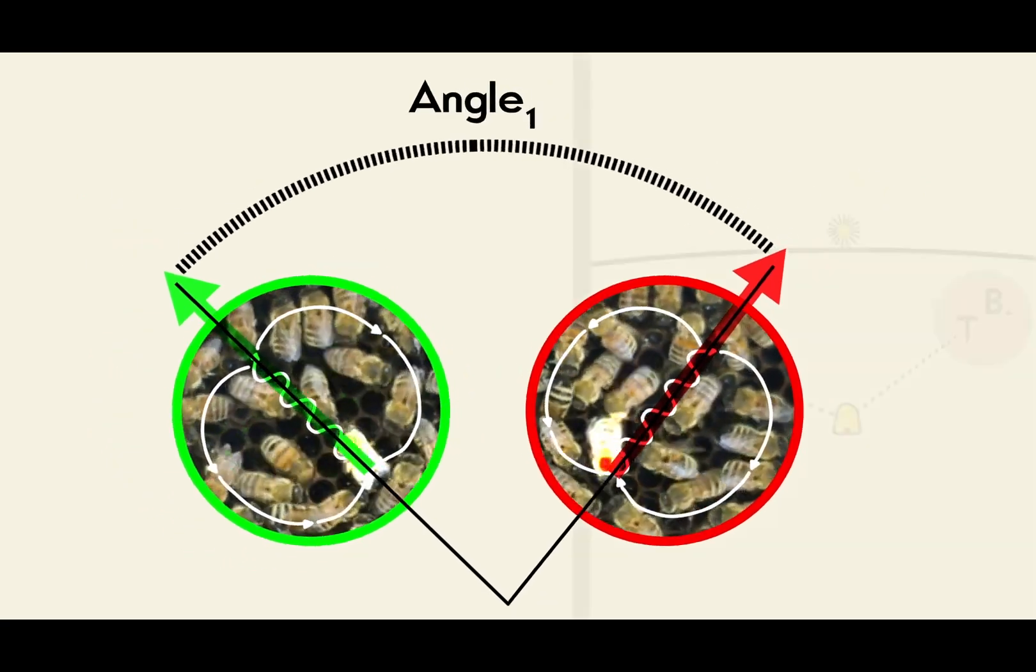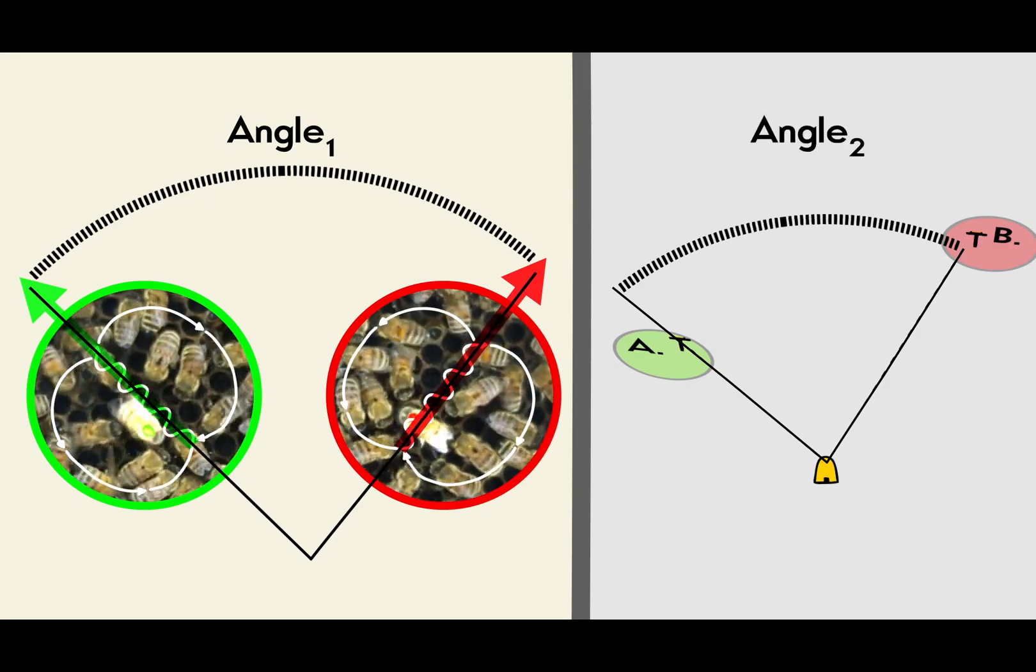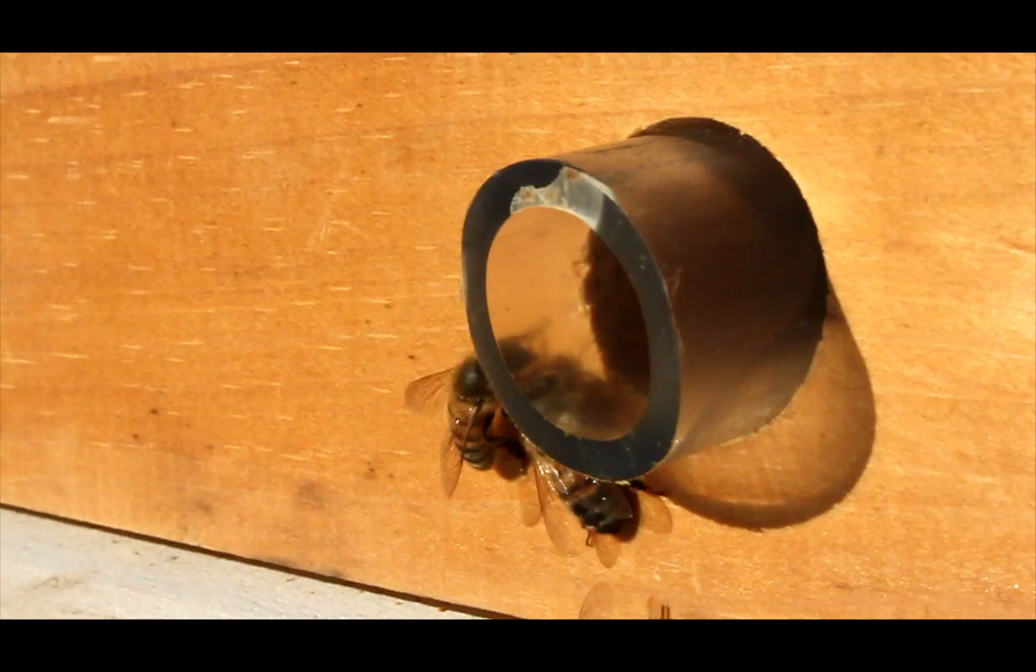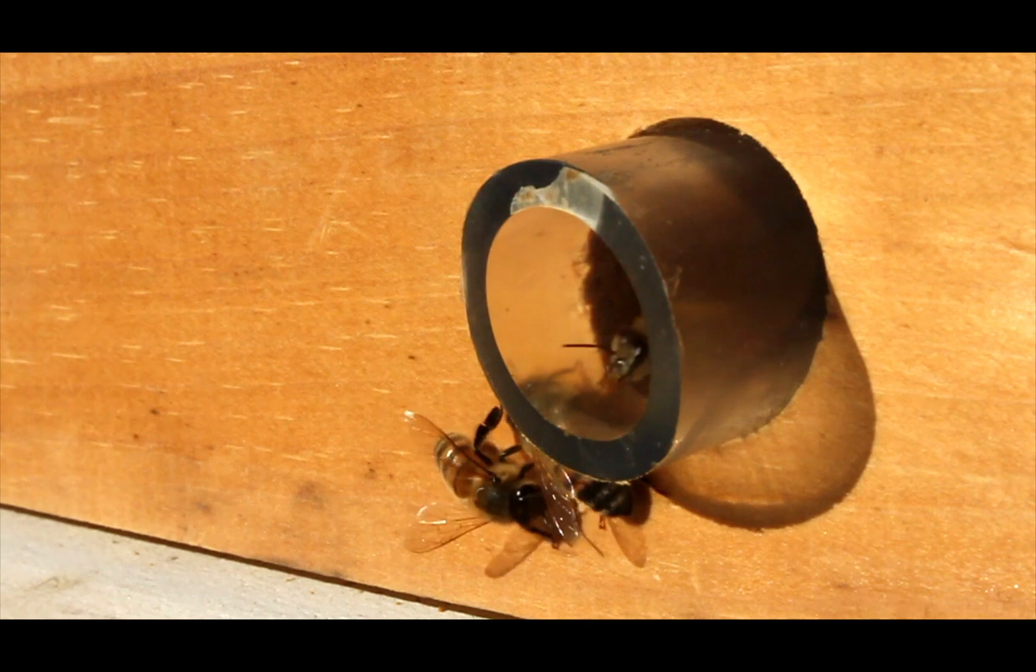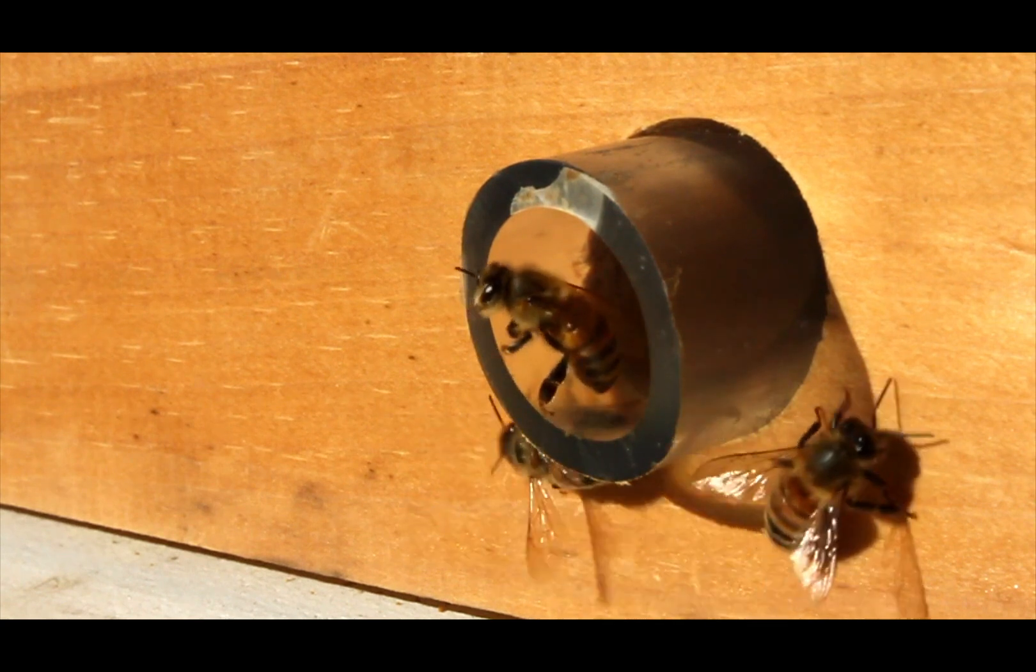Incredibly, the angle of rotation precisely matches the angle between the feeding stations and the hive. This must be a clue to the mystery of how the bees are able to share information about the location of food.